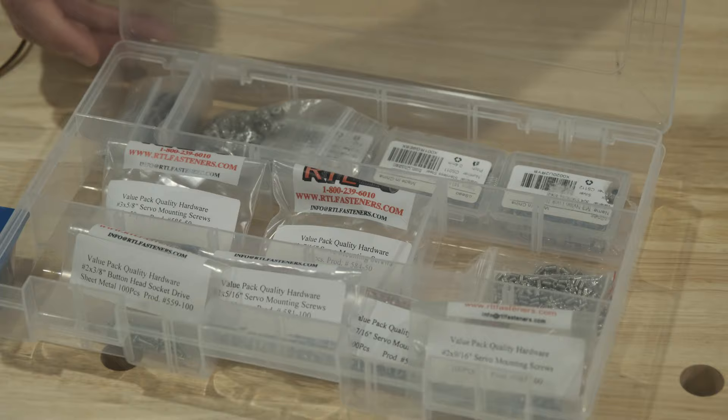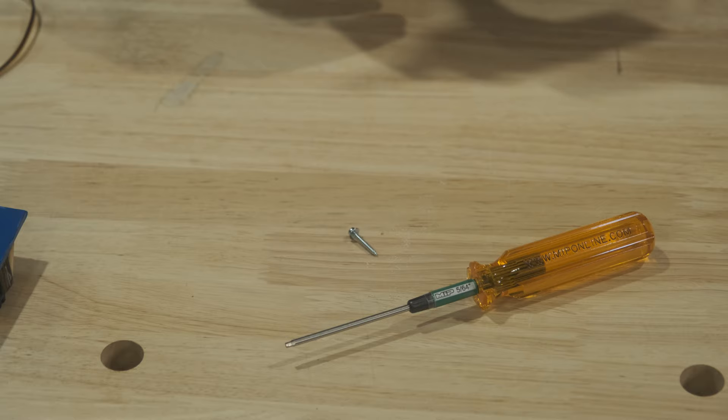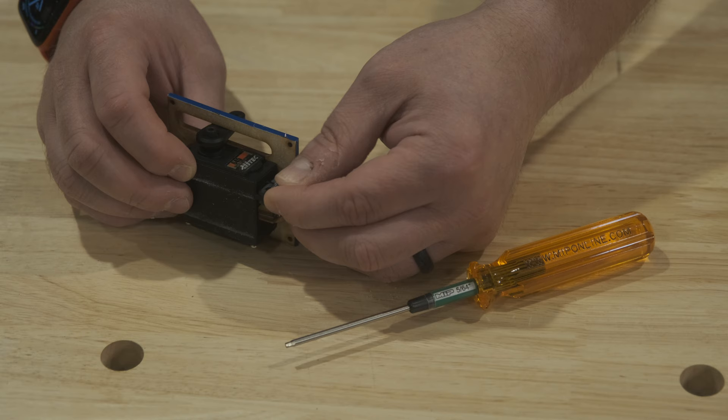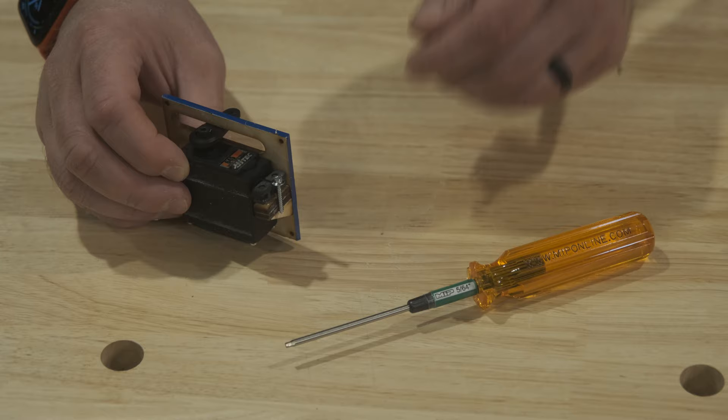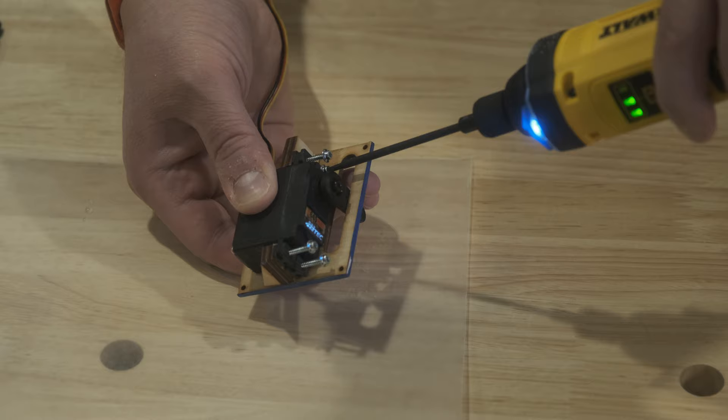Now, I don't like using the supplied Phillips head servo screws that come with the Hitec servo, so I'm using the number three, five-eighths servo screw, which works pretty well for this application. But as always, you want to check that the servo screw you're using is long enough. For servos I like using the number three servo screws, and we'll work all of these in to establish those threads.